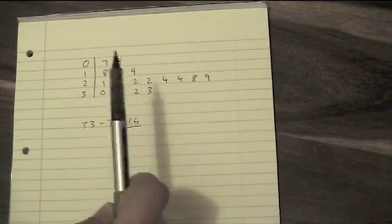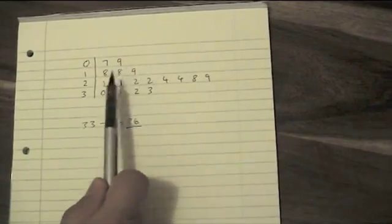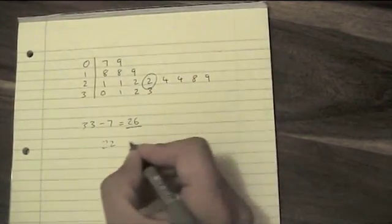Now a stem and leaf diagram, your numbers are already in order. So you just do 1, 2, 3, 4, 5, 6, 7, 8, 9, and you see in this case our median is 22.